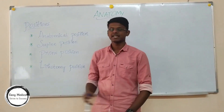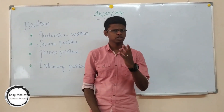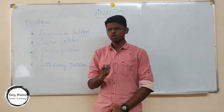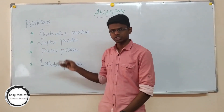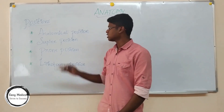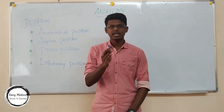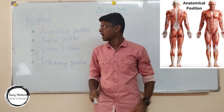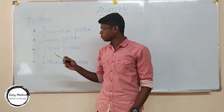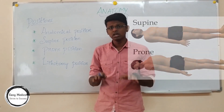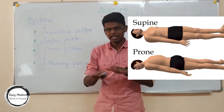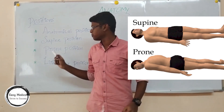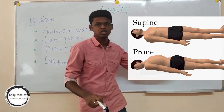Now let's discuss about the positions in anatomy. There are four main positions in anatomy that a doctor should know. Anatomical position is a case in which the patient is said to be in an upright position. Next, it's supine and prone positions. Supine and prone are both lying positions — supine is abdomen facing upwards and prone is abdomen facing downwards.